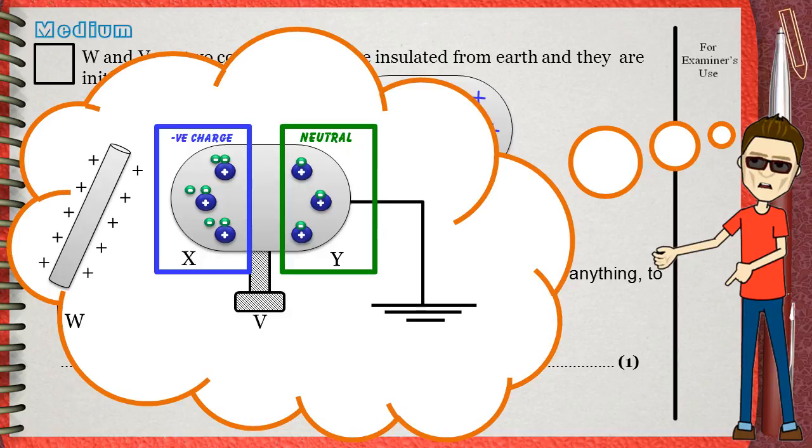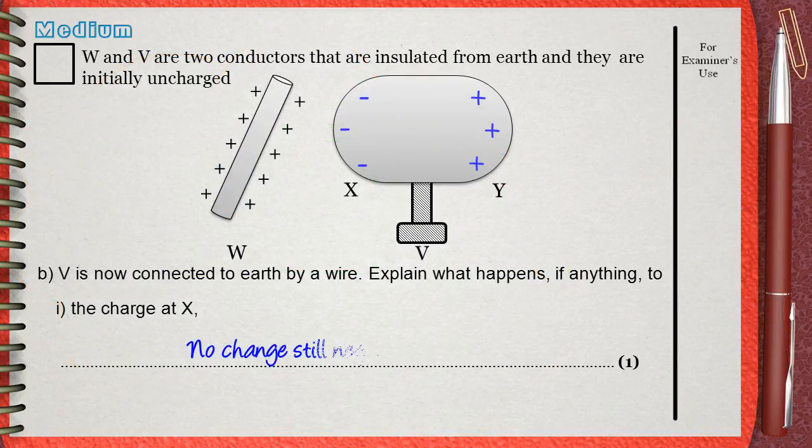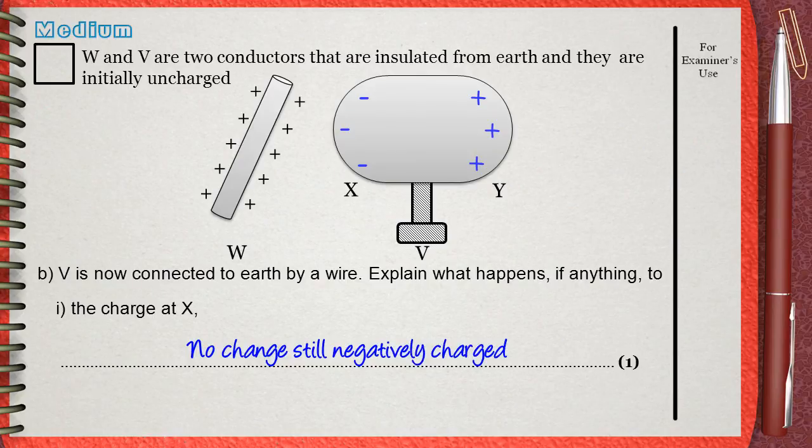This is what you have to understand about earthing. So what happens to the charge at X is nothing, it is still negatively charged.